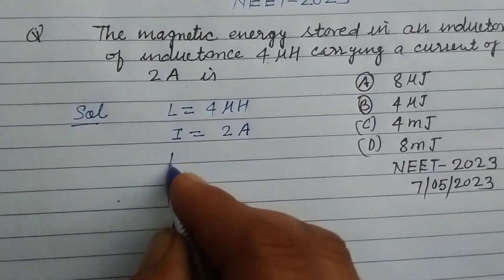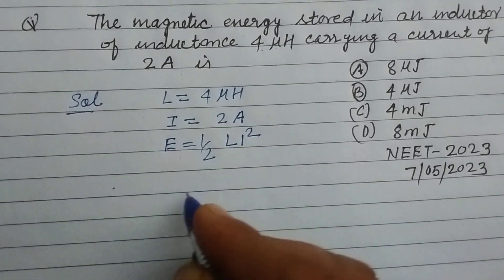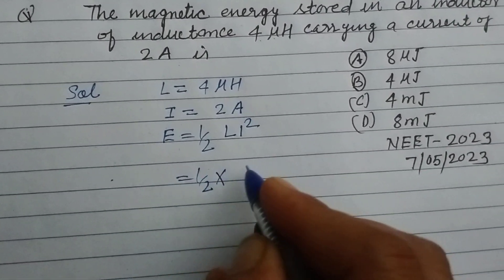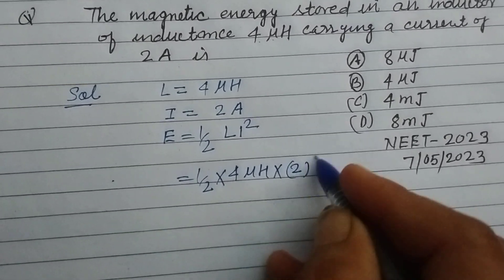So energy stored equal to half L I square. So half, L is 4 microhenry, I is 2 ampere, 2 square.